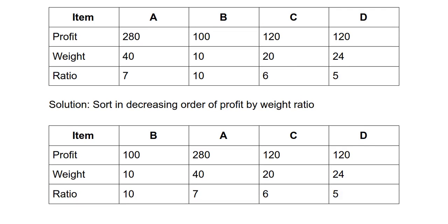So suppose my capacity was 60 kgs, so I will first select b because it is giving me the highest ratio, and I will check whether I can include b as a whole in my bag or not. My capacity is 60 kgs and 60 is greater than 10, so I can include b as a whole in my bag. Once I have done this, I will have now 50 kgs of capacity remaining in my bag. Next I check for item a, which is having the second highest ratio. So a has a weight of 40, which is less than 50, so I can include a as a whole.